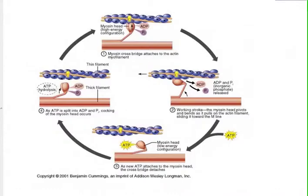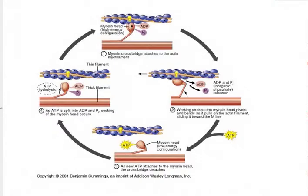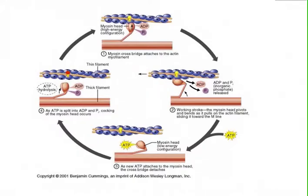The calcium is bouncing around in the sarcoplasm and comes in contact with the troponin on the actin filaments, or the thin filament. It will bind right there, causing a configurational change, moving the tropomyosin off of the actin — specifically off the myosin binding sites on the actin, which are right here.